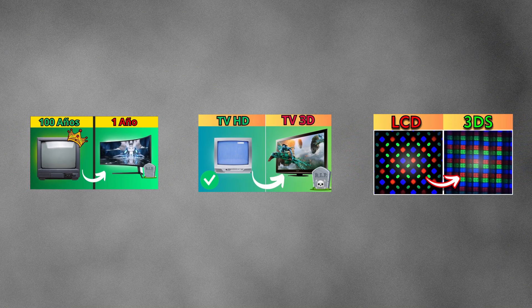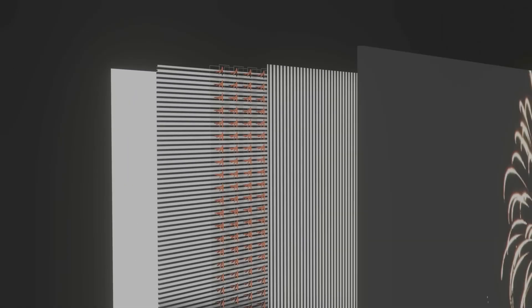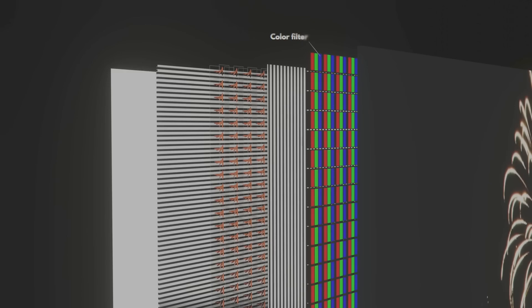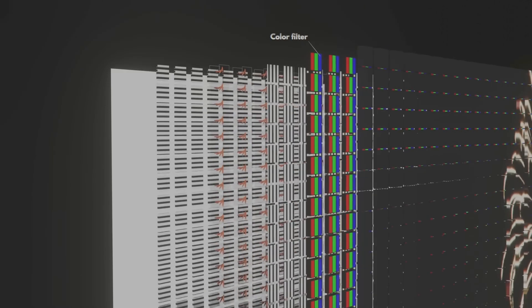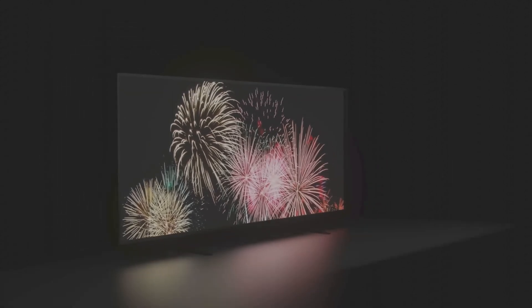In previous videos, we've discussed how traditional LCD or LED screens work. They rely on a backlight that is always on and a color filter in front that creates the images we see. But e-ink screens take a different approach. They eliminate the backlight entirely. Instead of using light to create images, e-ink screens use tiny capsules filled with a white liquid and small black particles. These capsules act as pixels.